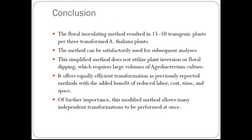Conclusion: The floral inoculation method results in 15 to 50 transgenic plants from 3 transformed Arabidopsis thaliana plants. This simplified method does not utilize plant invasion or floral dipping, which requires large volumes of Agrobacterium culture. It offers equally efficient transformation as previously reported methods with the added benefit of reduced labor, cost, time, and space. This modified method also allows many independent transformations to be performed at once. This lesson is now ended; in coming lessons we will talk about the remaining content of this course. Thank you.